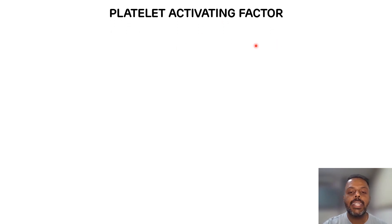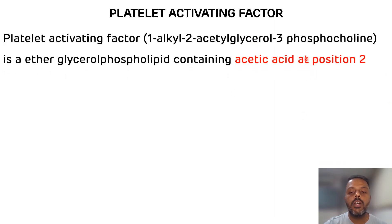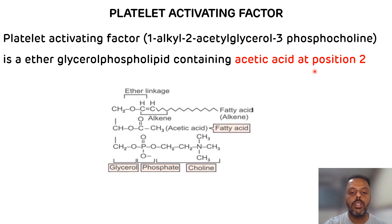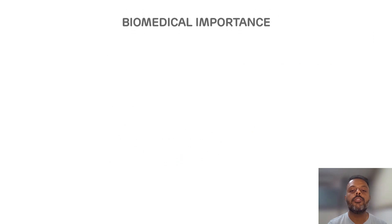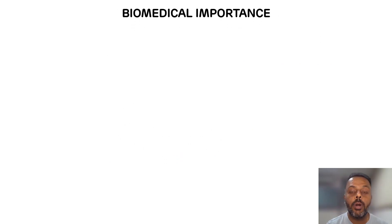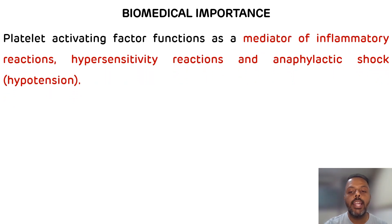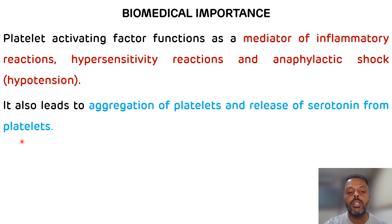Platelet-activating factor also contains an alkene ether linkage and there is a presence of acetic acid at position number two. You can see in the structure there is an alkene ether linkage, glycerol, phosphate, choline as a nitrogenous base, and acetic acid at position two. Platelet-activating factor plays important roles in platelet aggregation, anaphylactic reactions, inflammatory reactions, hypersensitivity reactions, and the release of serotonin from platelets.